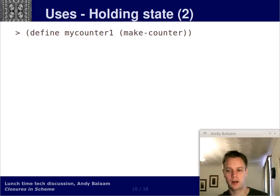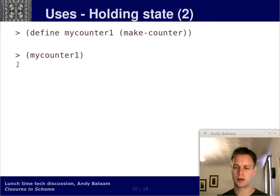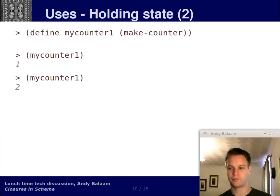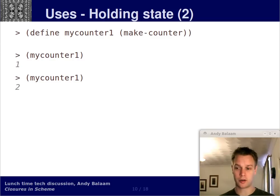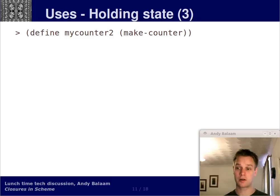So there's a procedure called makeCounter which has a value starting at zero, and it returns a procedure called counter. Counter increases the value by one and then returns it. Let's define a symbol called mycounter1 which is the result of calling makeCounter. When we call this function, it starts at zero, gets incremented, and returns 1. What happens when we call it again? That makes sense — it's 2. And you can keep going. This symbol mycounter1 holds onto a reference to a function which has a closure, and part of that closure is this value. It sticks around and stays with this procedure the whole way through.